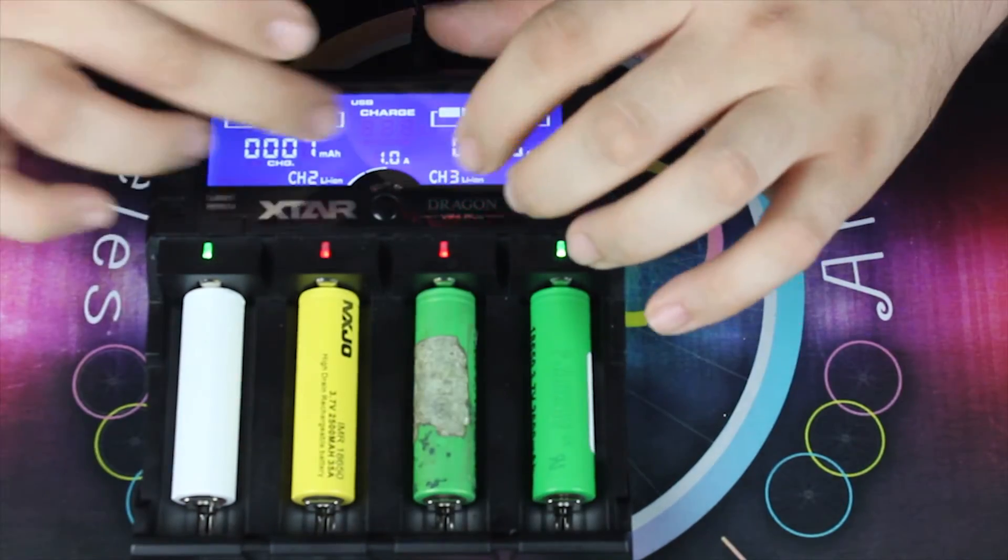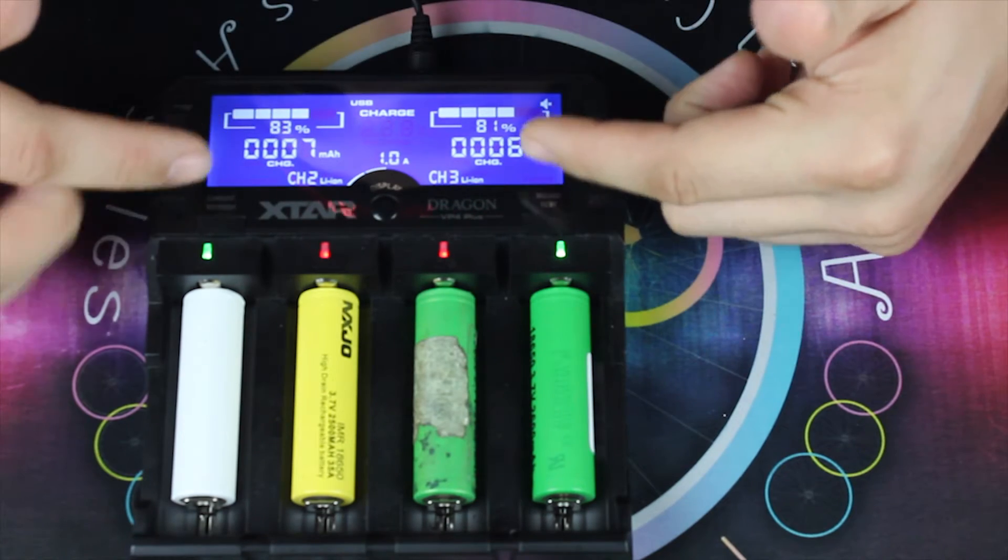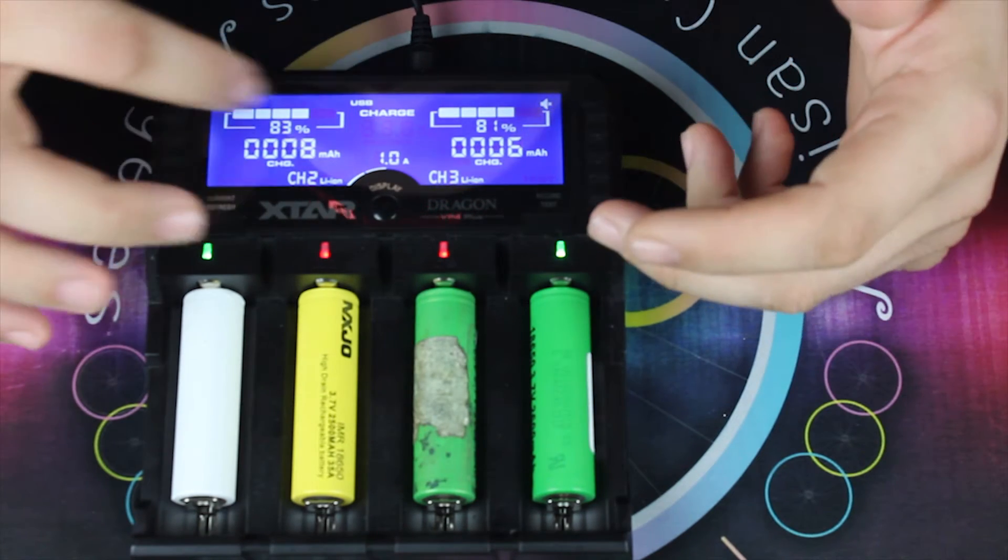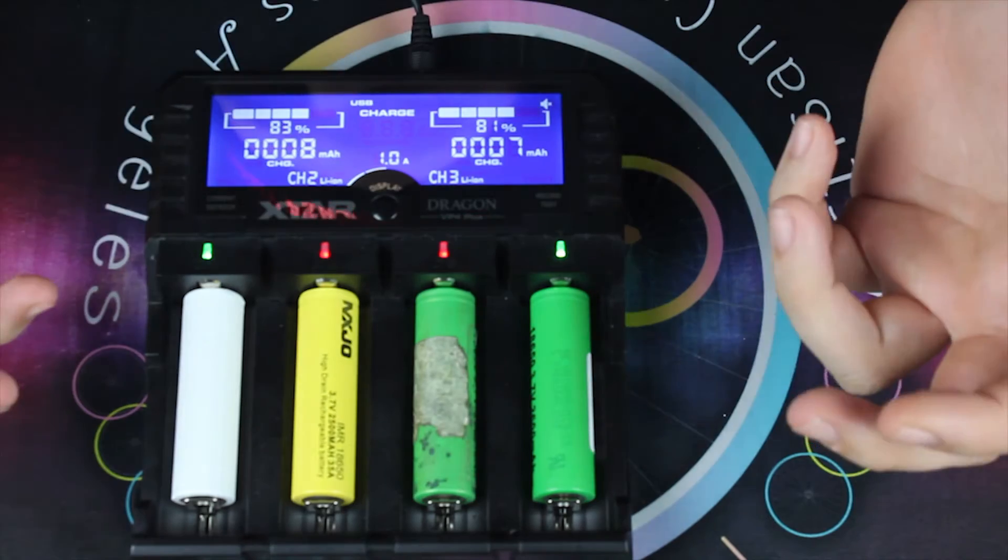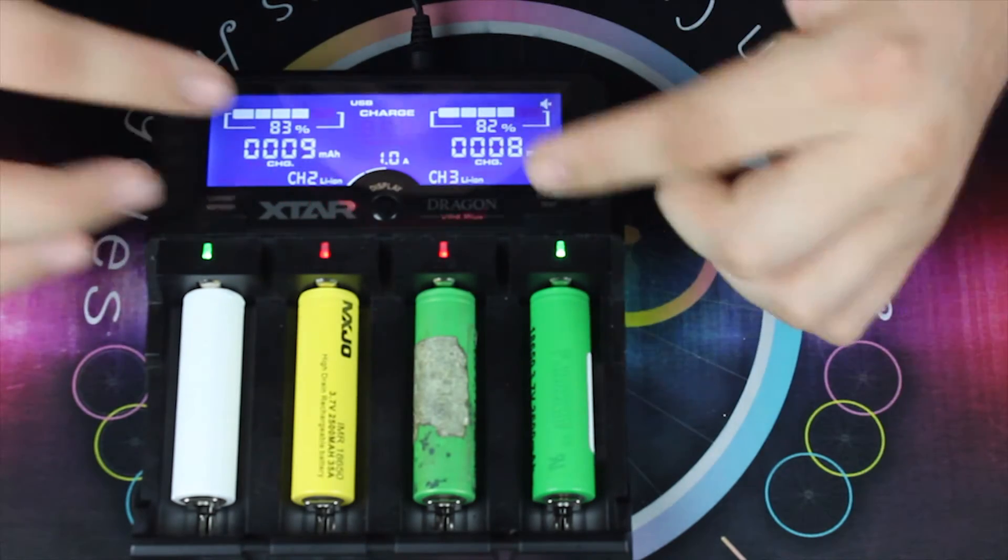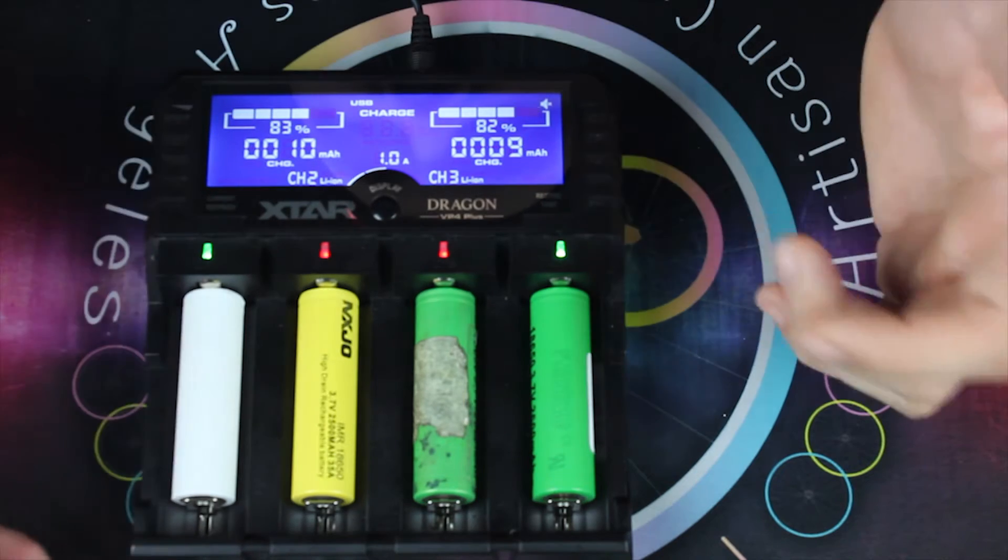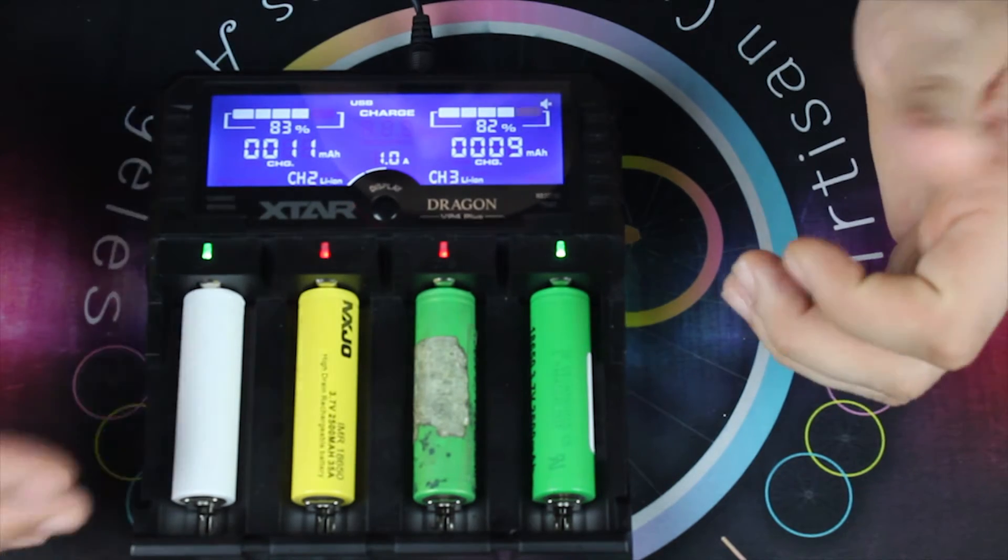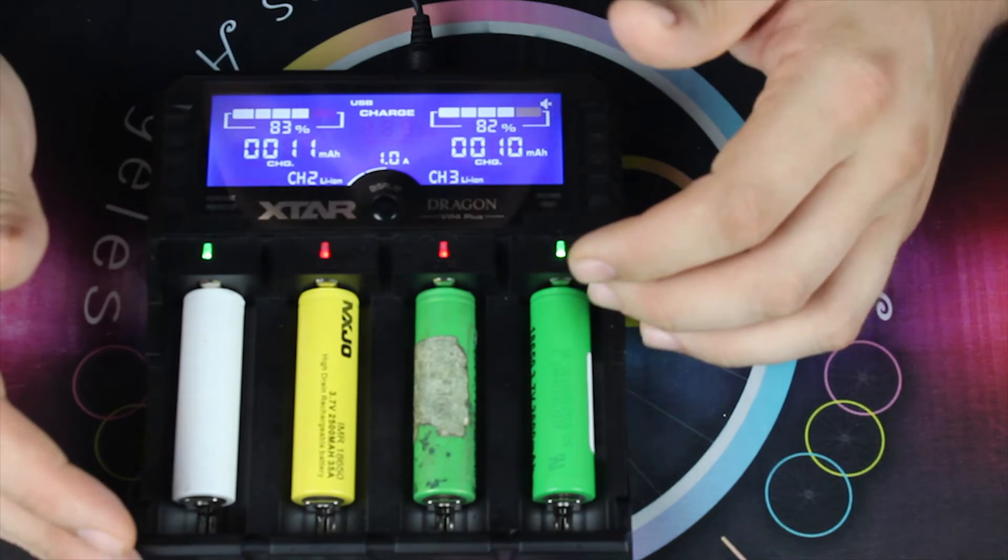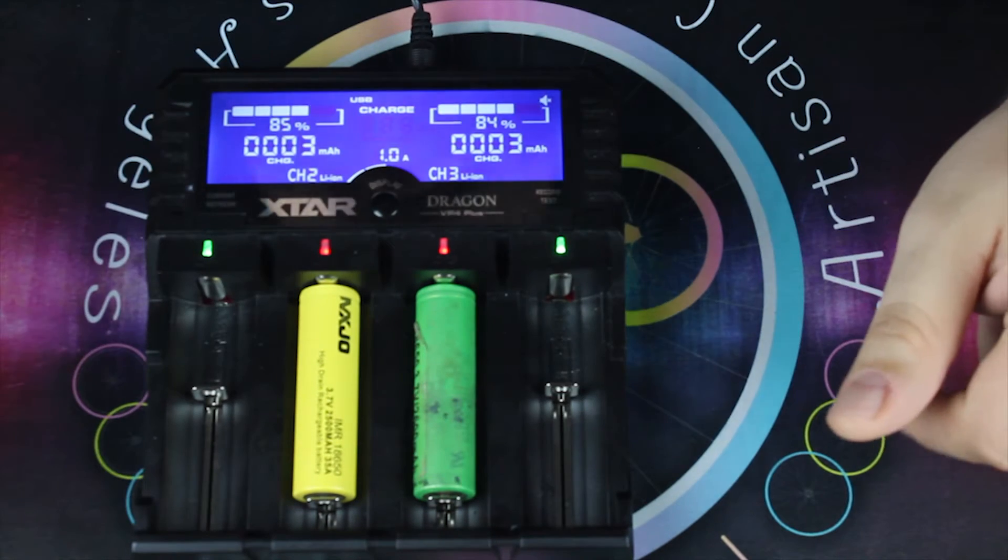Here we see the screen displaying the actual milliamp hours. I think that's a really cool feature to show. I mean, it shows the percentage like any other battery charger does, but it also shows you the actual milliamps that are going on there. You can keep an eye on something like that and see what kind of capacity your battery has and how much you're actually putting back into it.